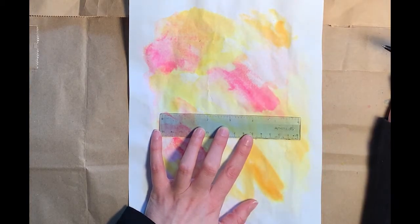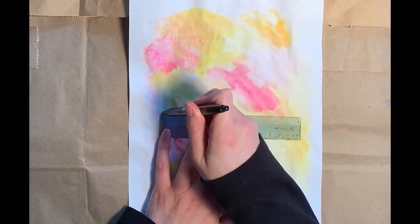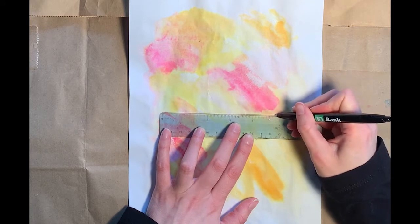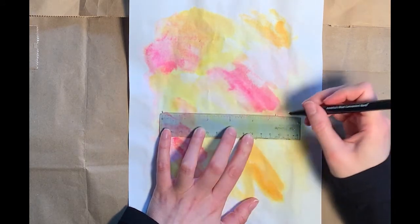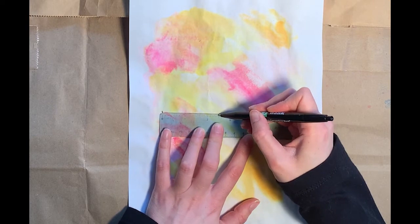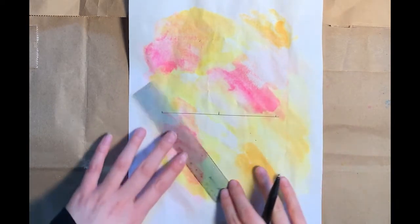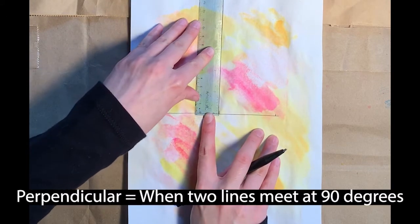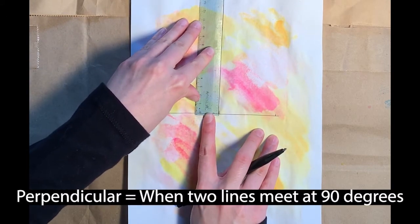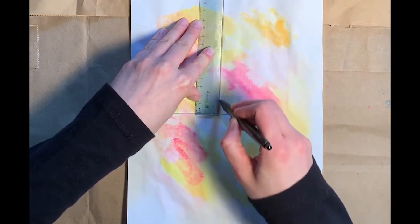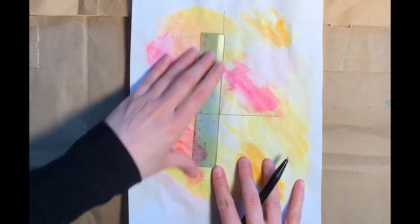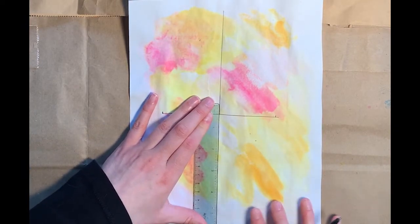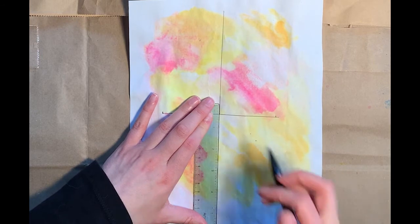So to start, you want to draw a five inch line across the middle of your paper. And make sure you put a little notch at the five, and a little notch at the zero. Now halfway through that is 2.5, two and a half inches. We're going to make a little notch there. And then we're going to take our ruler, and we're going to draw a perpendicular line from that point to the top of the paper. Doesn't matter how long it is, it just has to go to the top of the paper. And we're going to do the same thing on the bottom. Make sure it's as perpendicular as possible.